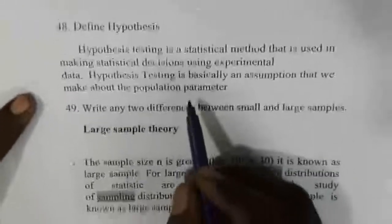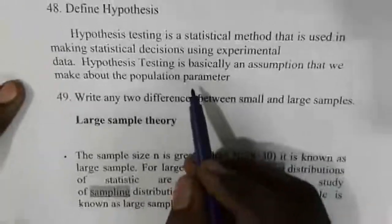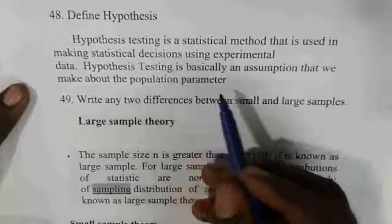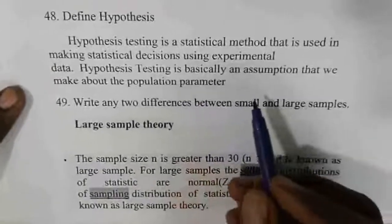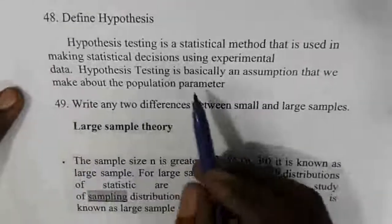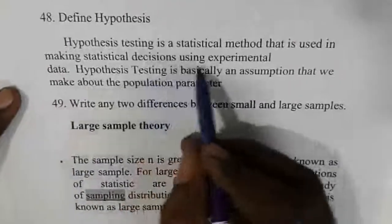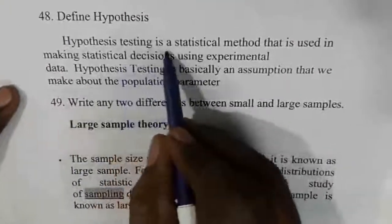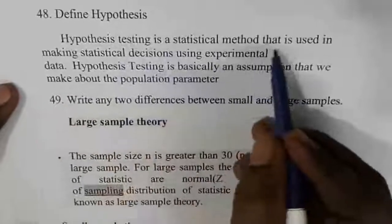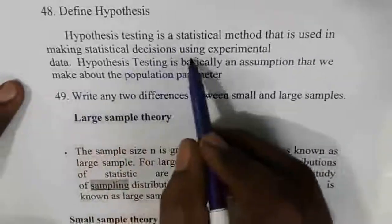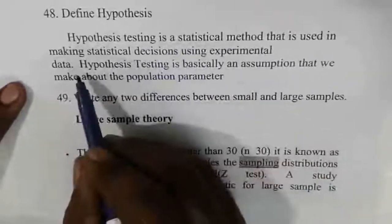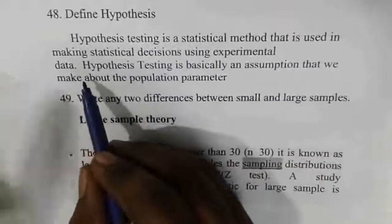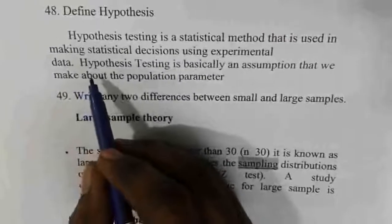Hypothesis is very important. There are two types: null hypothesis and alternate hypothesis. Hypothesis testing is a statistical method used in making statistical decisions using experimental data.